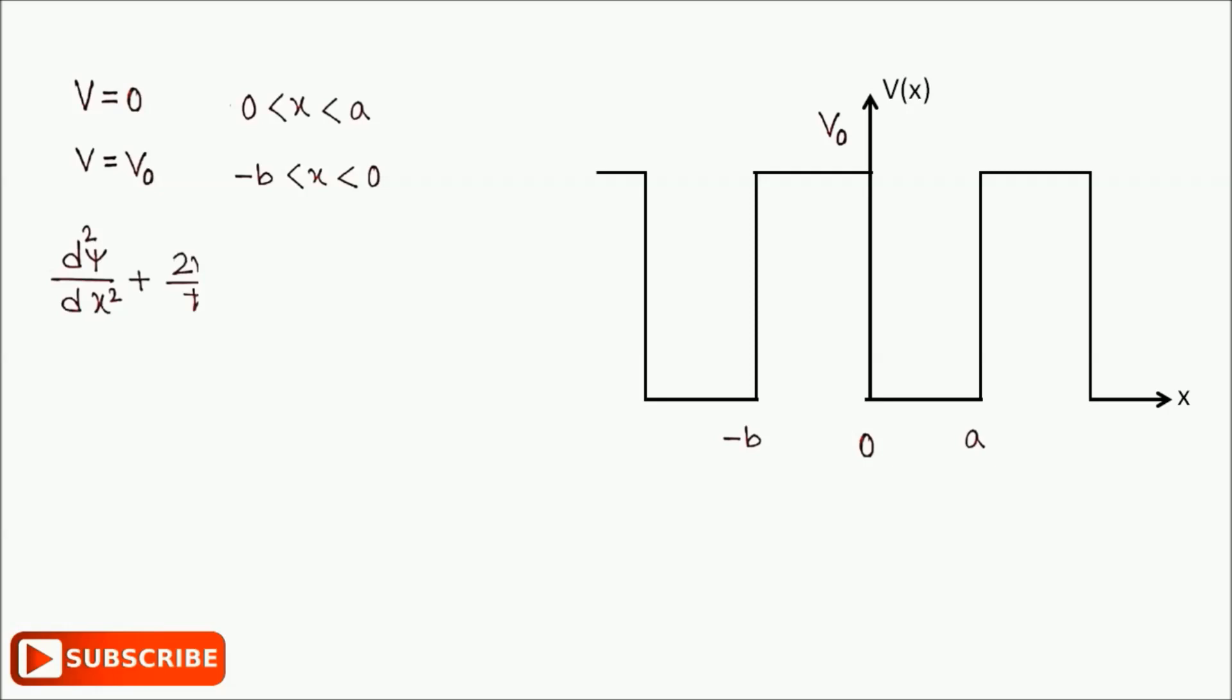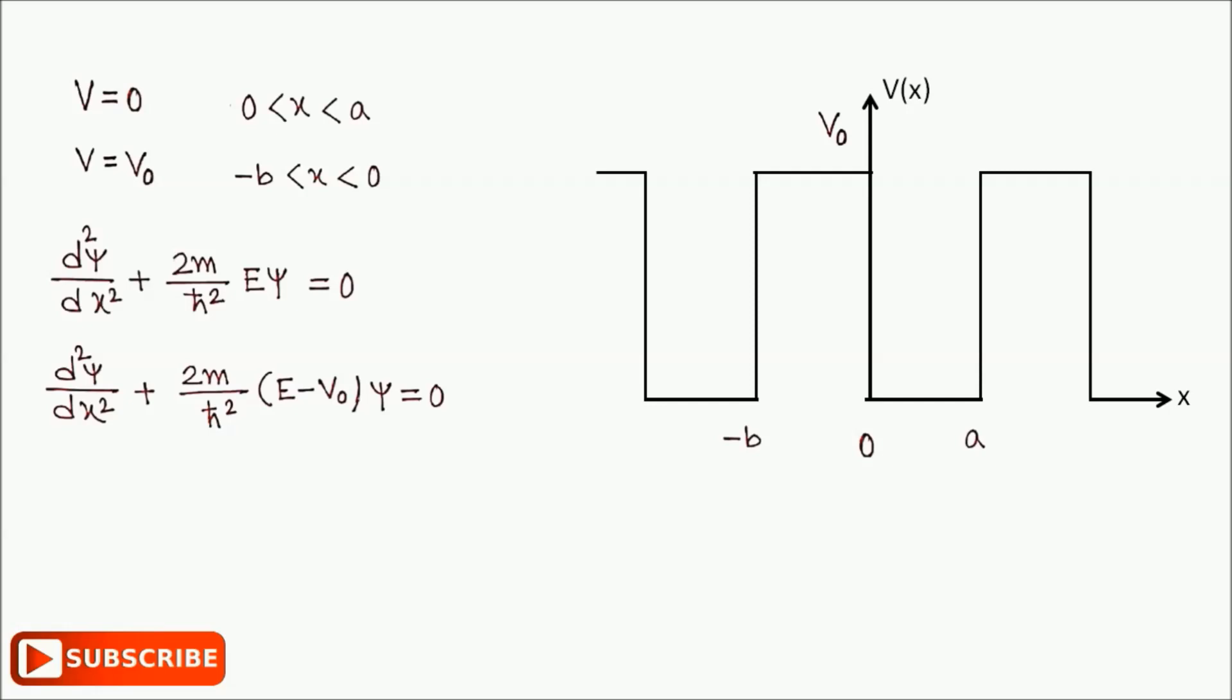Assuming that the energy E of the electron is less than V₀, we define two real quantities α and β as shown.